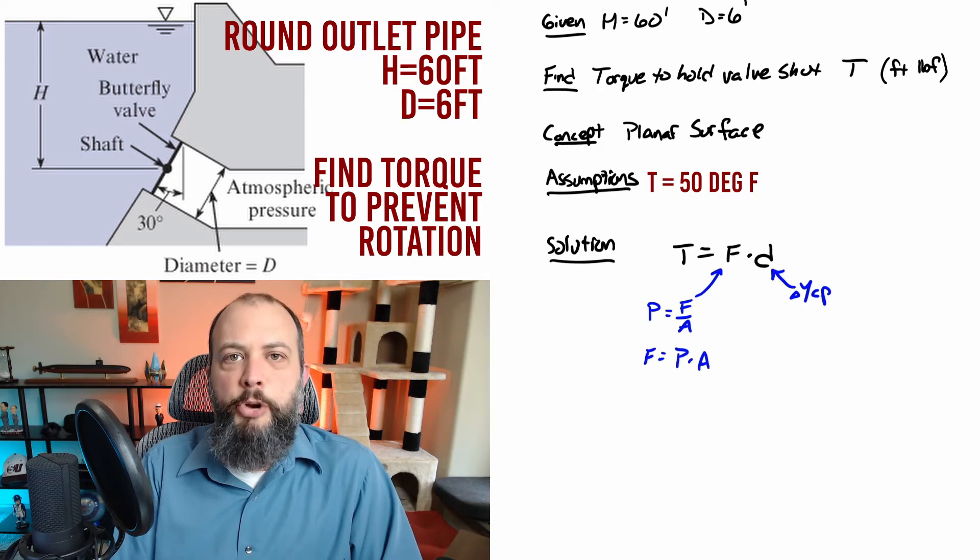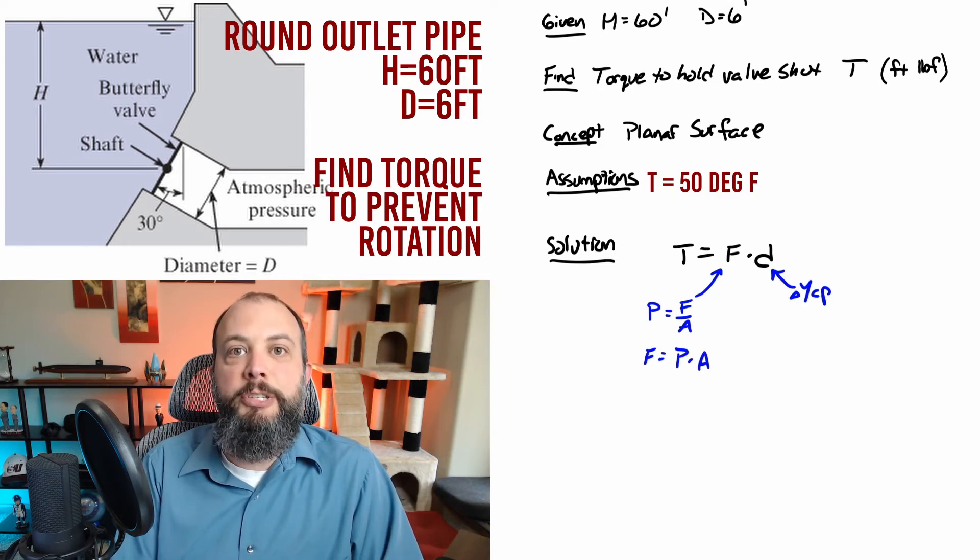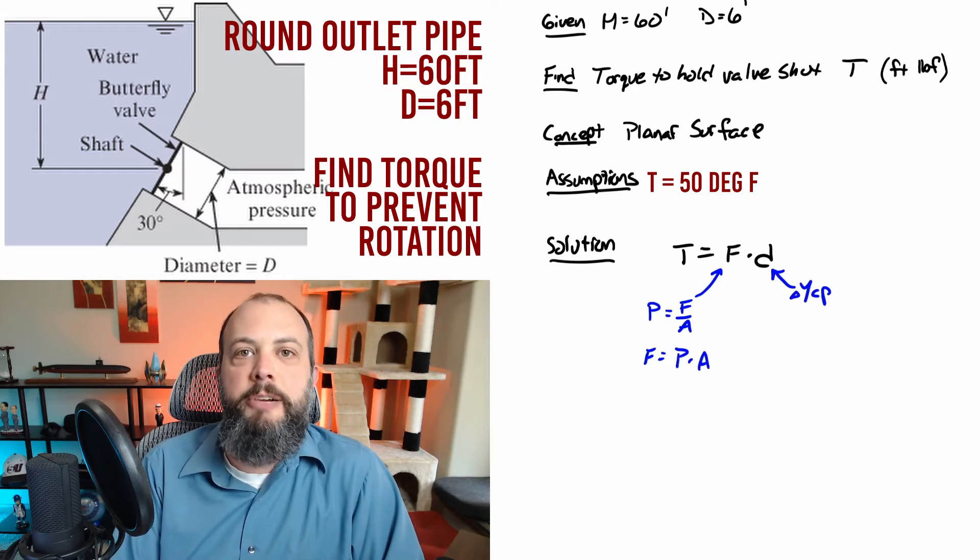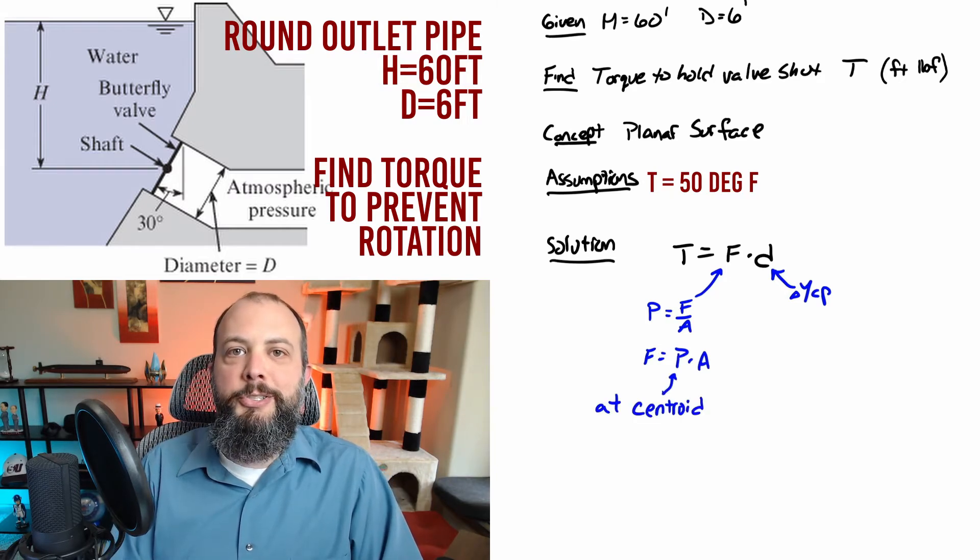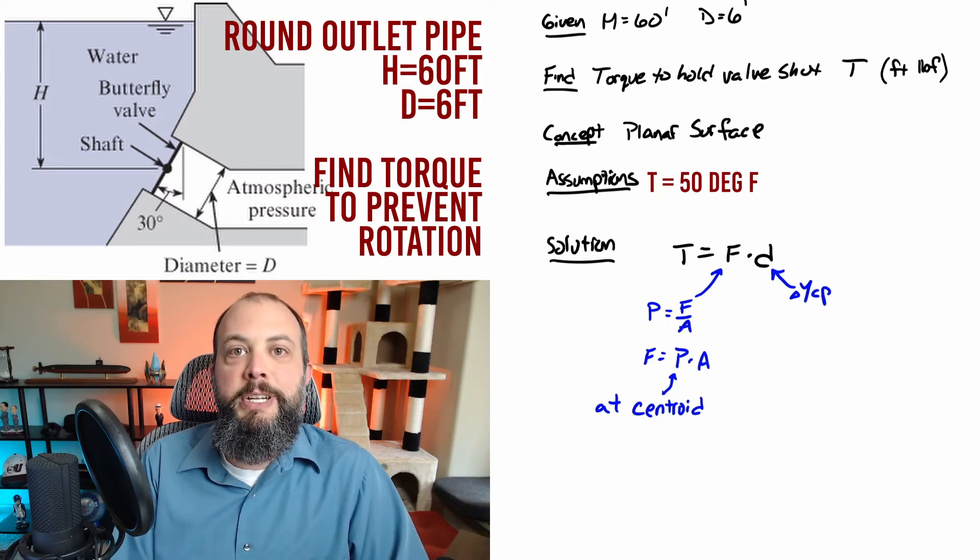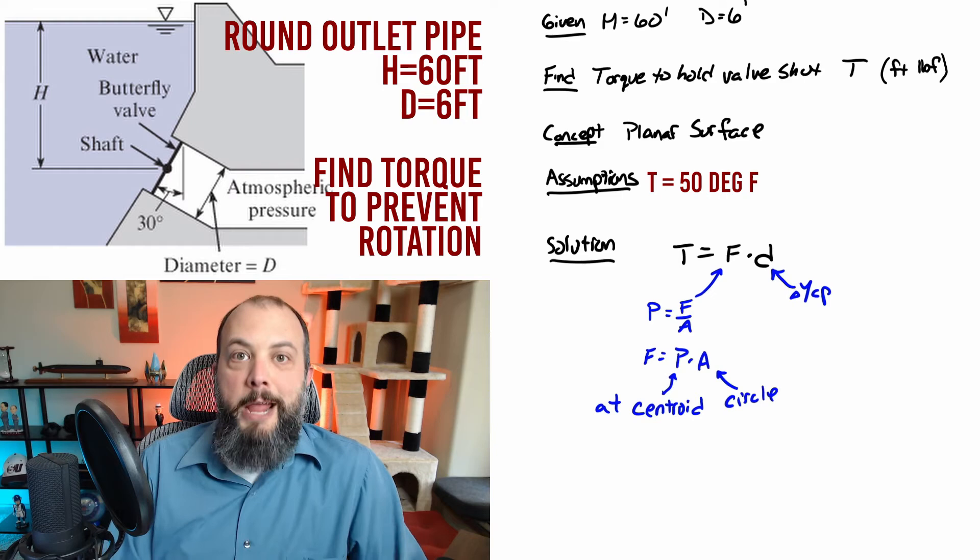Looking at that force, we're going to be able to find that as pressure equals force over area rearranged as force equals pressure times area. Fortunately, we don't actually need to do any calculus to find the pressure distribution over the entire circular door. We just need to find the single number pressure at the centroid of the circular door and area is just area of the circle.